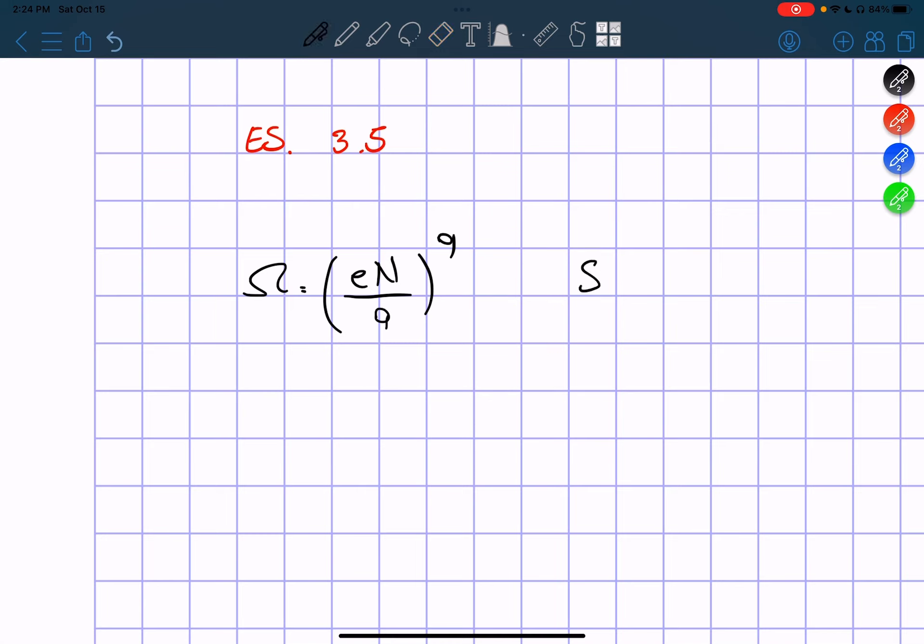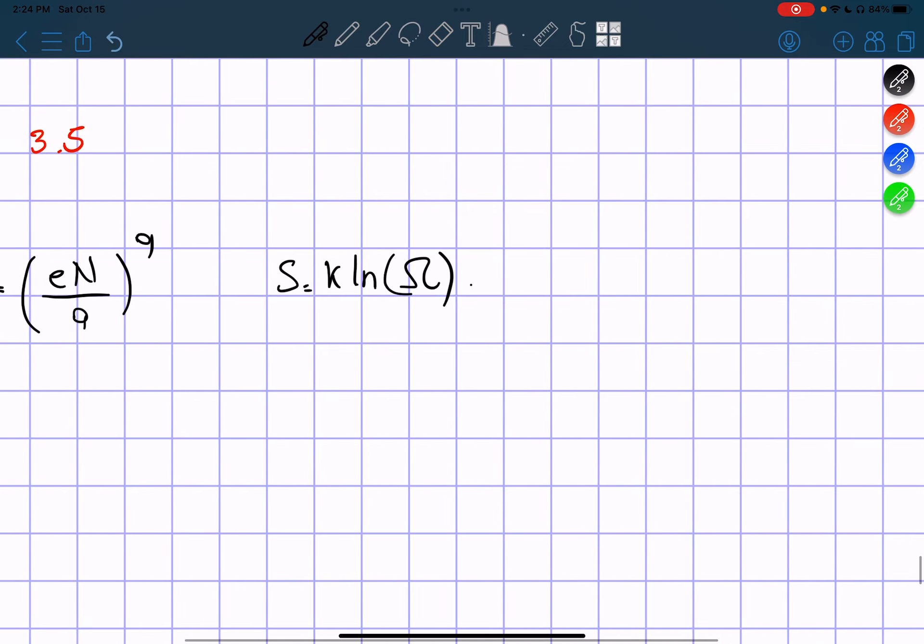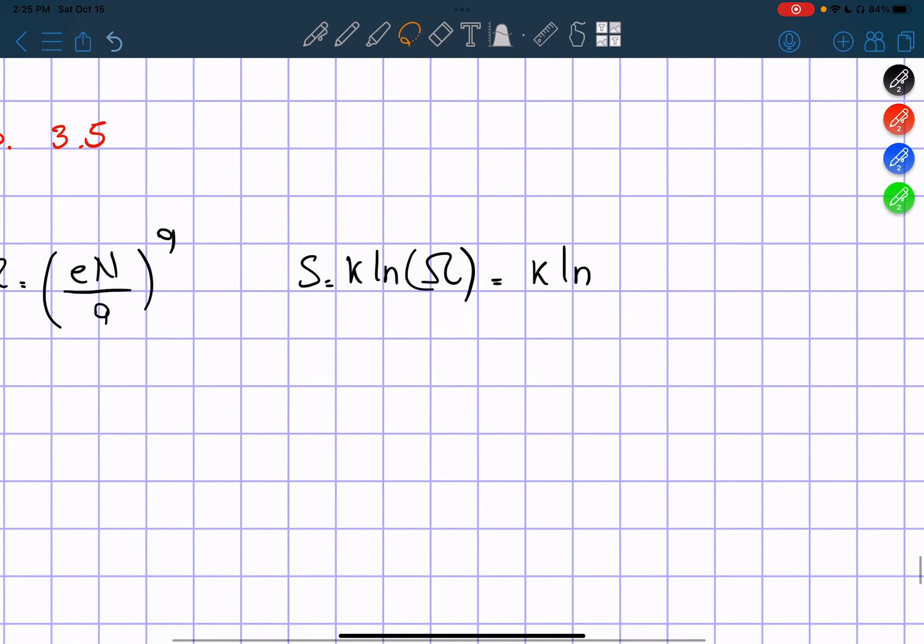So now, we know that the entropy is equal to K ln of the multiplicity. So we're just plugging our multiplicity, we get that it's equal to K ln of this.